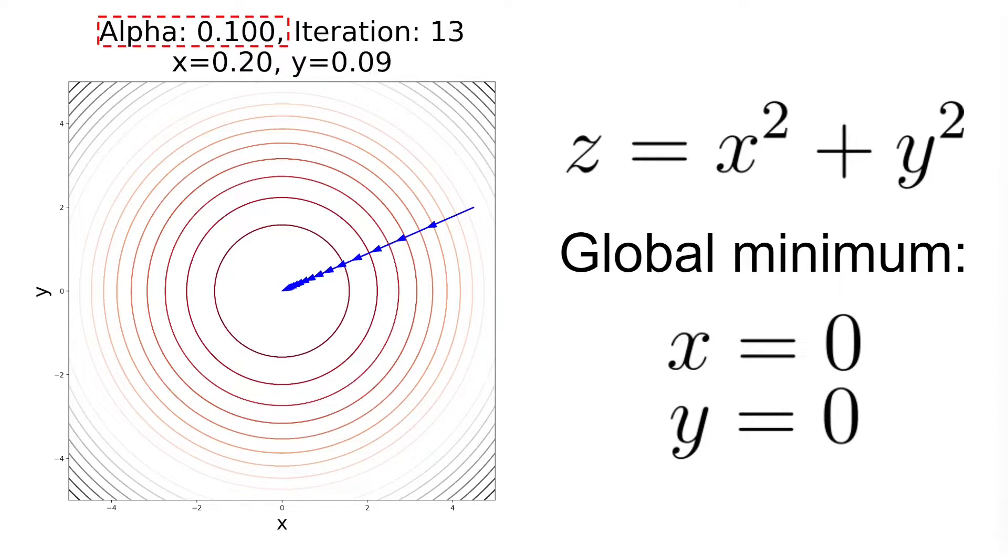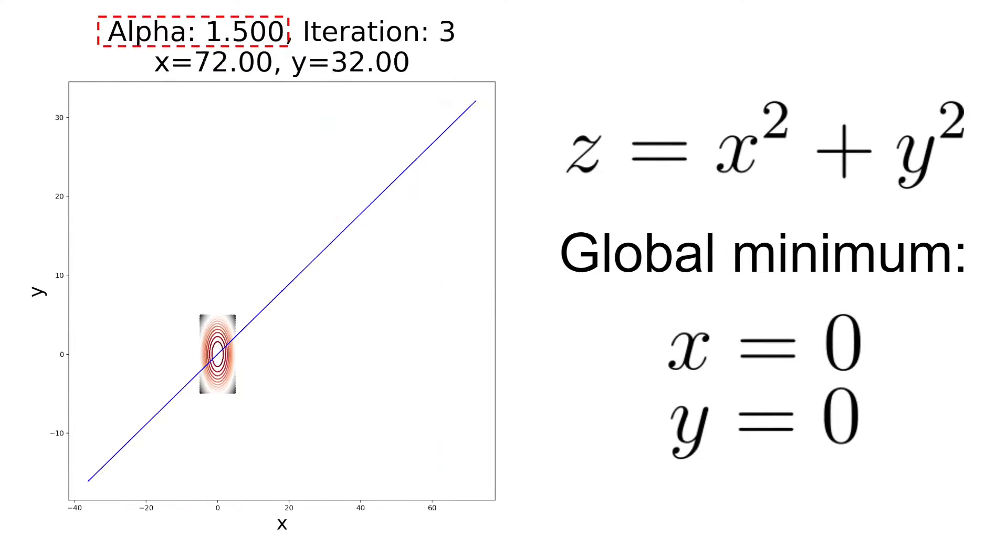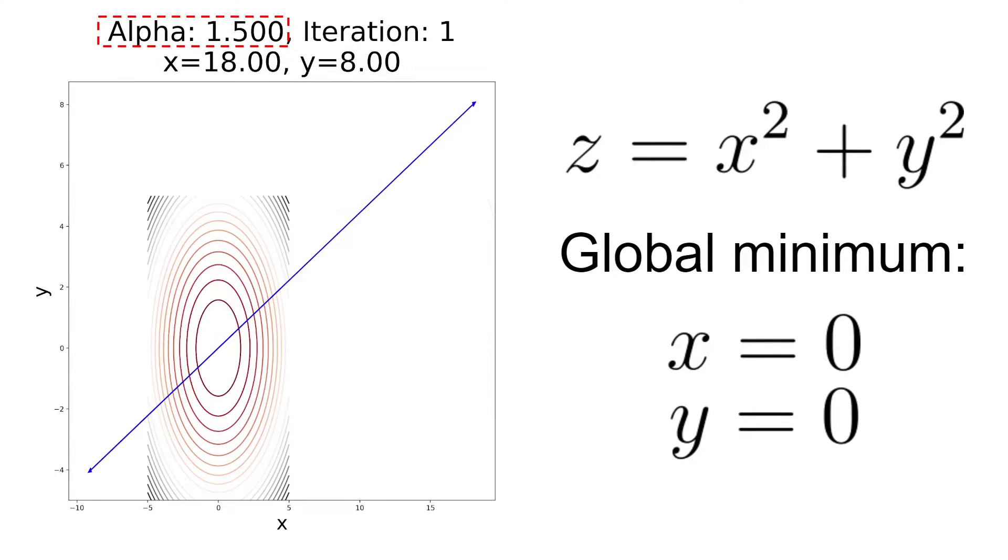One important thing here that we have to keep in mind is that the convergence rate is dependent on the learning rate alpha in this example. If we make it too small then the gradient descent will take forever to converge and if we make it too big then gradient descent will start to diverge.